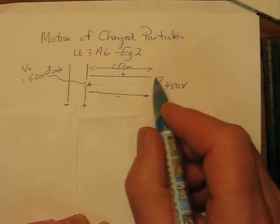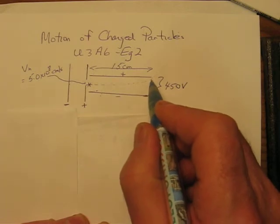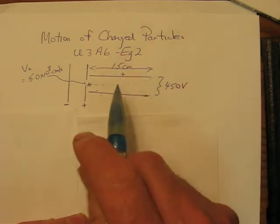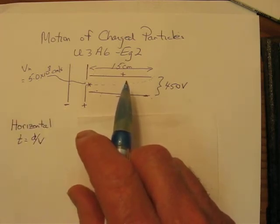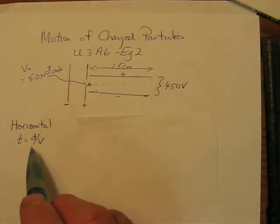The problem asks what speed or velocity does it have when it exits the plates. The first thing you could do is calculate the time that it is in the horizontal plates.